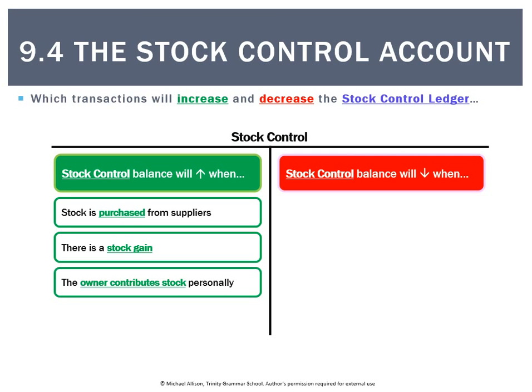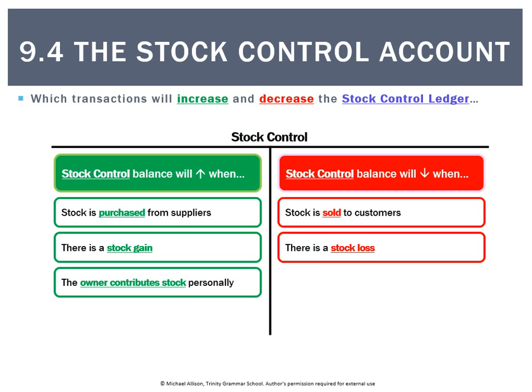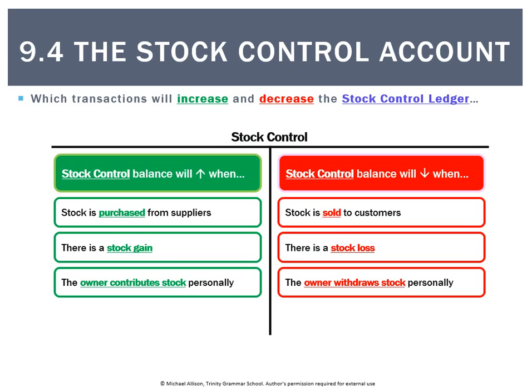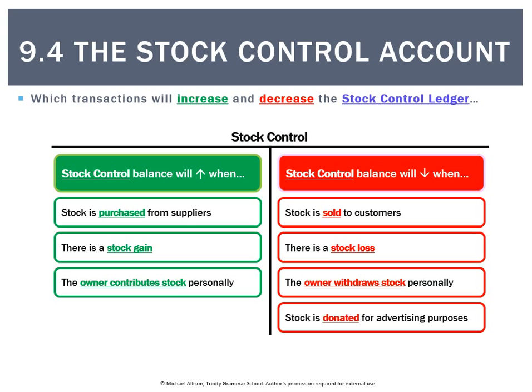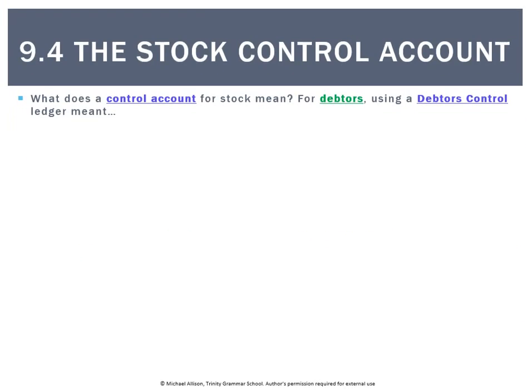Stock can also go up when the owner contributes stock to the business personally — that's a capital contribution. Stock goes down when stock is sold, if there's a stock loss such as theft, if the owner takes stock for personal use, or if the business donates some for advertising purposes.